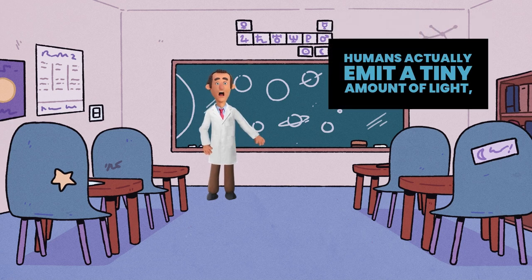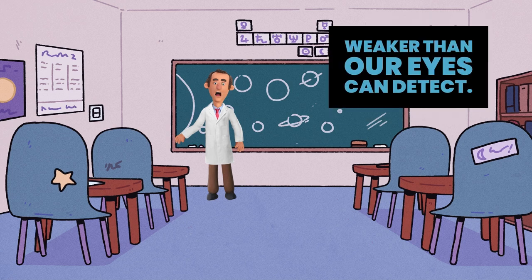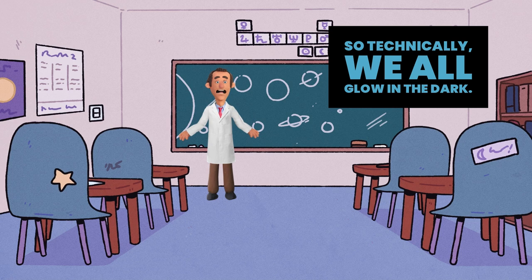Humans actually emit a tiny amount of light, but it's about 1,000 times weaker than our eyes can detect. So technically, we all glow in the dark.